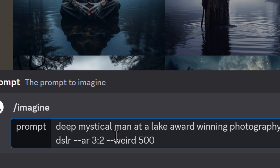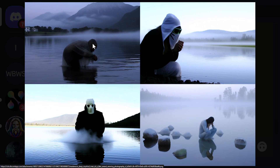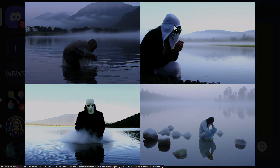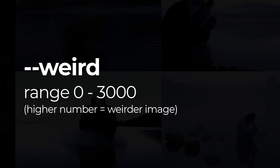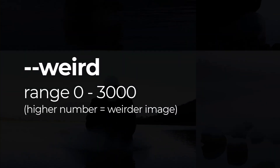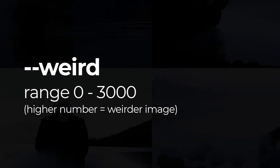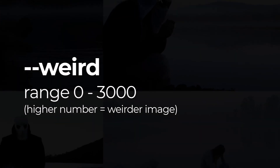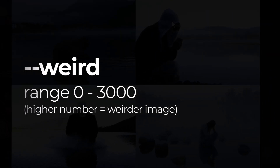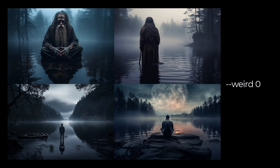Notice how the image gets a bit weirder. This is a new parameter that's been released for MidJourney for use with version 5.2. You can actually take this parameter anywhere from 0 to 3000. They've put down 0 to 1000 but say you can go up to 3000 if you need things to get that weird. To recap — things get weirder as we add it.